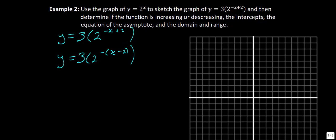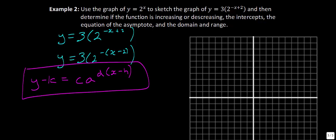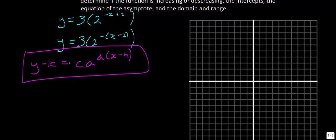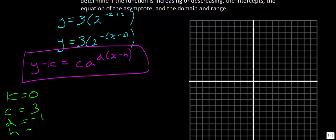Using the general form y minus k equals c times a to the power of d times (x minus h), we can identify our parameter values. k equals 0 because there is no constant added on the left side. c equals 3. d equals negative 1, since we factored out a negative. h equals 2, found by setting that part of the exponent equal to 0. Always try to make the first term in the exponent positive so you can easily identify h.